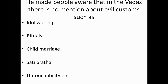He wrote a book entitled Satyarth Prakash and made people aware that the Vedas contain no mention of evil customs such as idol worship, rituals, child marriage, Sati Pratha, or untouchability. He advocated monotheism — that there is only one God. He preached in Hindi, allowing his thoughts to reach the maximum number of people across the country. Dayanand Saraswati established the Arya Samaj in 1875, with branches established in Lahore, Punjab, Uttar Pradesh, Rajasthan, and Gujarat, and he also made attempts to achieve national unity by advocating a classless and casteless society.